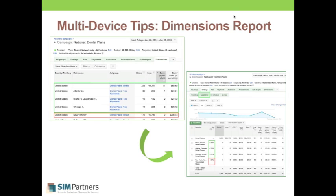The screenshot on the right shows how I'm leveraging location bid modifiers. I've adjusted bid modifiers for Miami, Atlanta, and Chicago up by 24 to 25 percent, and decreased my bids in New York by 30 percent. This means for anyone searching in Miami, Atlanta, or Chicago, I'm willing to pay 25 percent more on top of my original bid to show up higher in results because they convert so well. The exact opposite applies to New York, where I lower my bid modifier since that traffic isn't performing well.